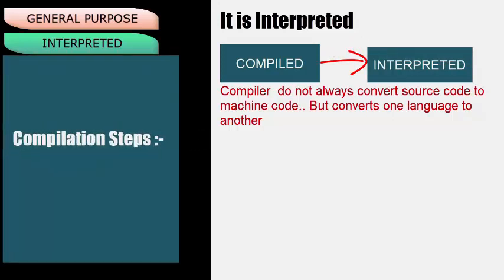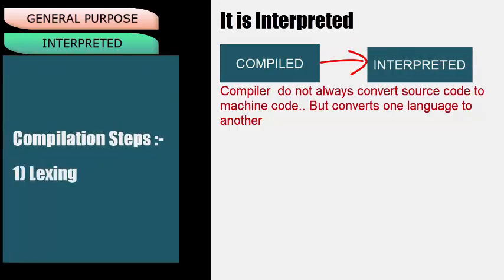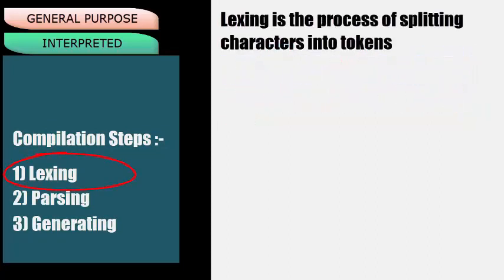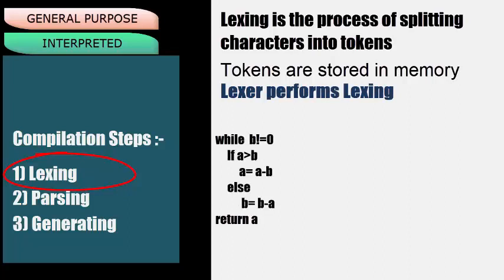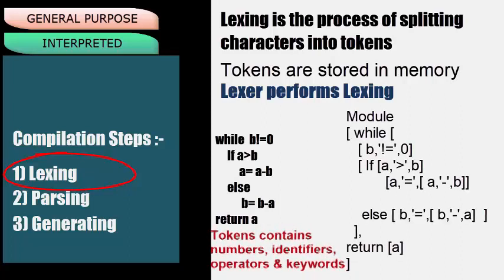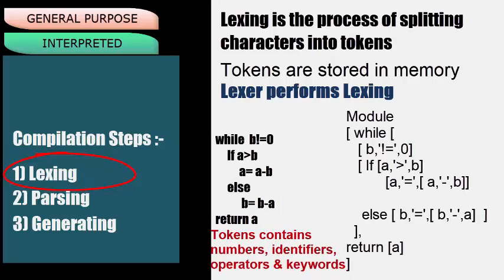Lexing is the process of splitting characters into tokens. These tokens are then stored in memory as output. The software that does this is called a Lexer. For example, given a source code, the Lexer reads the entire code and converts it to tokens. Tokens contain numbers, identifiers, operators, and keywords.